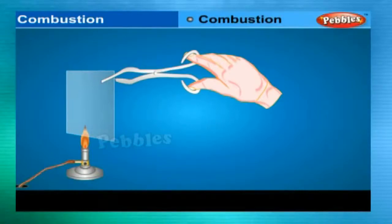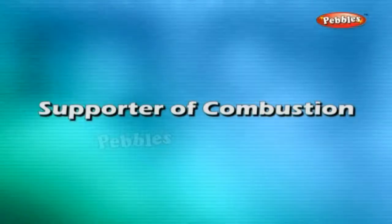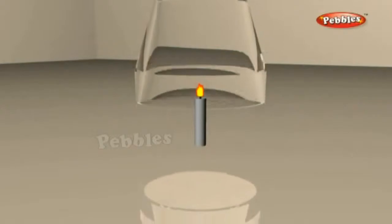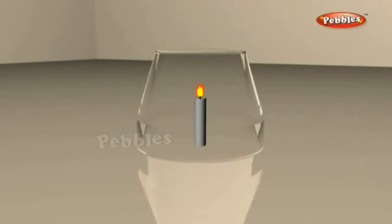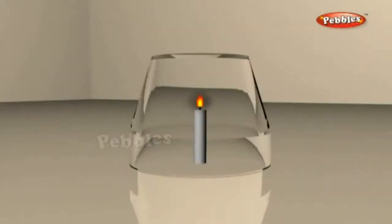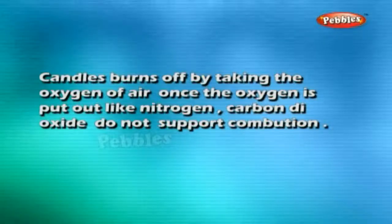Ignition temperature: A substance catches fire only when it reaches its ignition temperature. Materials that catch fire easily are called inflammable materials. Cooking gas, petrol, and white phosphorus have low ignition temperatures. The ignition temperature of a material is defined as the lowest temperature at which the material starts burning.